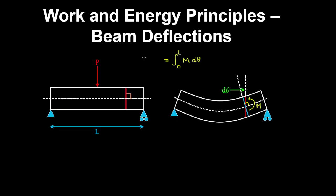The work done by the point load is the point load multiplied by the deflection at mid-span. Now if we divide by dx and multiply by dx, then this here is the curvature, which is equal to M on EI.